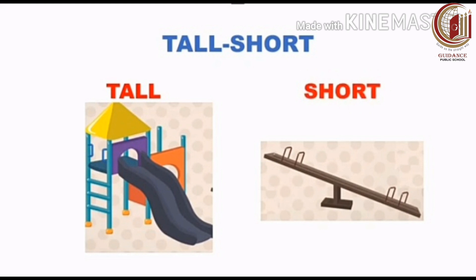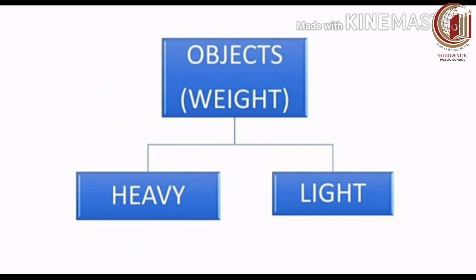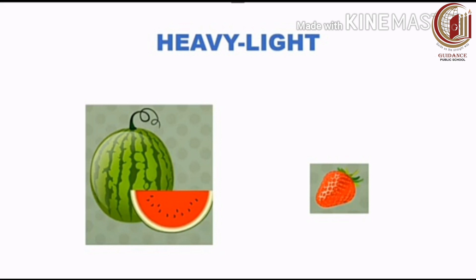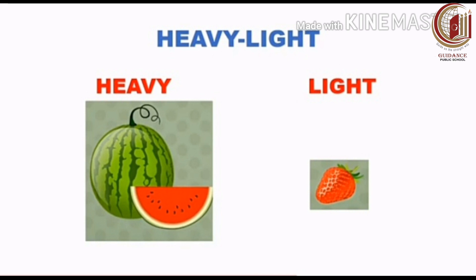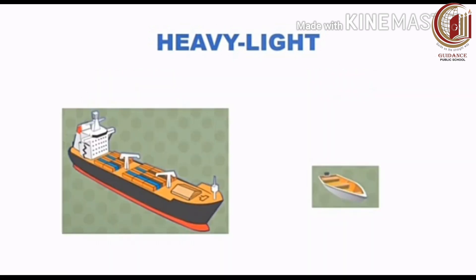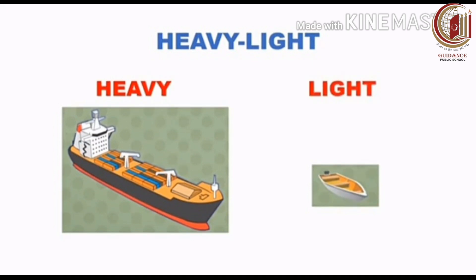Now that we know how objects can be compared based on their heights, have you ever thought why some objects can be easily lifted while others cannot? This is because different objects have different weights. When we classify objects based on their weight, we get heavy and light objects. Look at these fruits — this watermelon is heavy but the strawberry is light. This ship is heavy but the board is light.